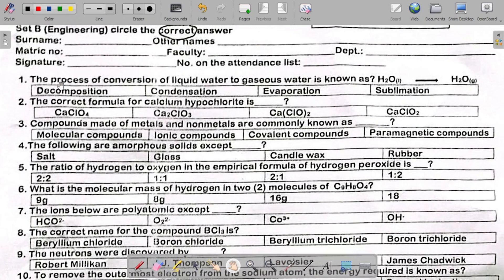Question one says the process of conversion of liquid water to gaseous water is known as? The process of conversion of liquid to gaseous state is simply called evaporation. So the answer is evaporation. We'll circle evaporation.